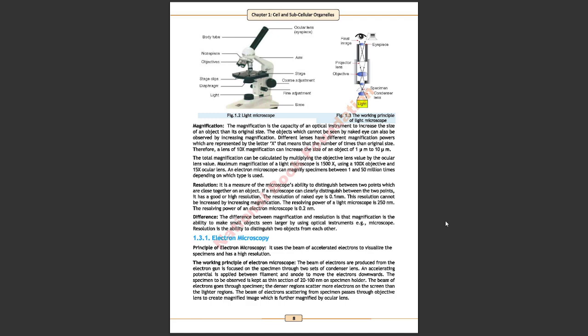The beam of electrons produced from electron gun is focused on the specimen through two sets of condenser lens. An accelerating potential is applied between filament and anode to move the electron downward. The specimen to be observed is kept as thin section of 20 to 100 nanometer on specimen holder. The beam of electron goes through specimen. The denser regions scatter more electrons on the screen than the lighter regions. The beam of electrons scattering from specimen passes through objective lens to create magnified image which is further magnified by ocular lens.